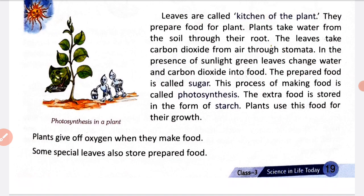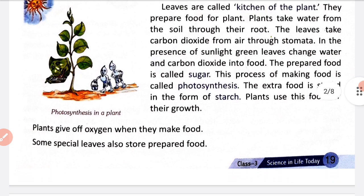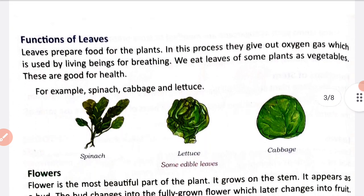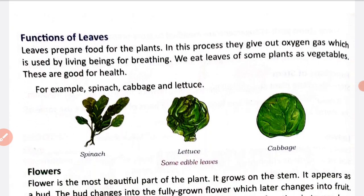During photosynthesis, leaves convert carbon dioxide and water into food using sunlight. The food that leaves prepare is called sugar. As you know, leaves prepare food for plants and in this process they give out oxygen gas, which is used by living beings for breathing.